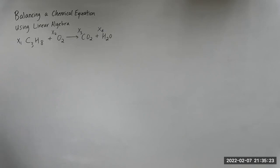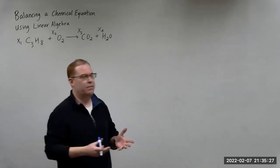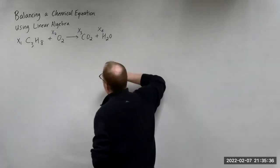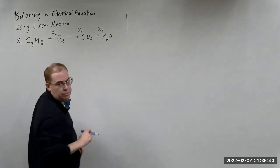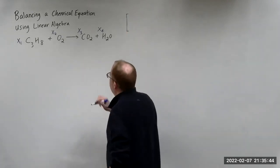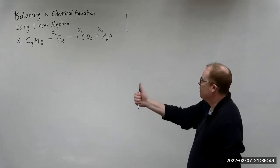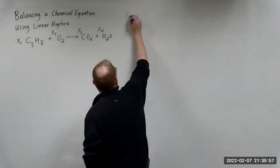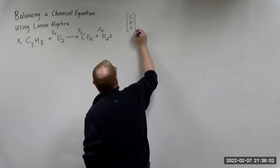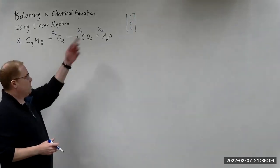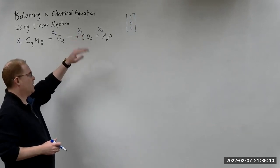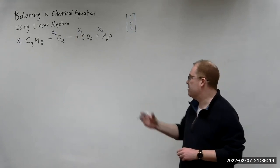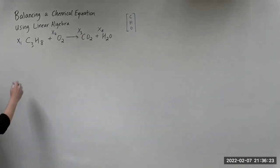The next thing to do is to create what I'm going to call a storage vector. That's where we're going to store our elements. Notice that in this chemical equation there are three elements involved: we have carbon, hydrogen, and oxygen. So I'm going to put those into the storage vector: carbon, hydrogen, oxygen. The order doesn't matter — you can put hydrogen first, then carbon and oxygen, or any other order. This is just what we use to store the values given for each molecule.